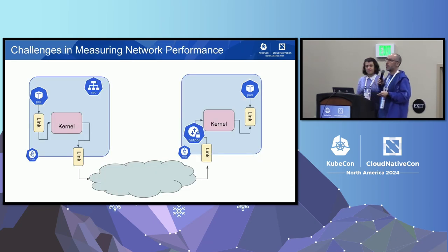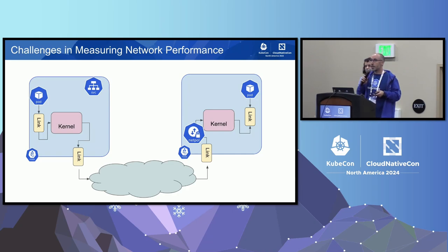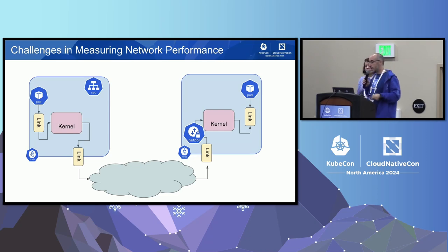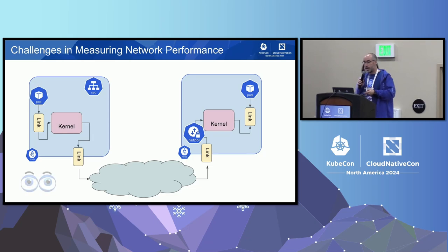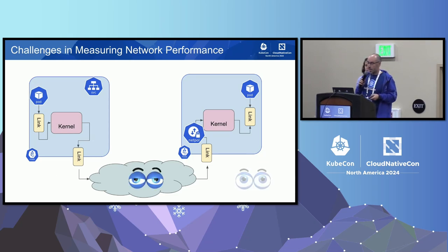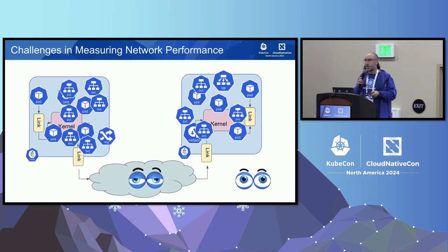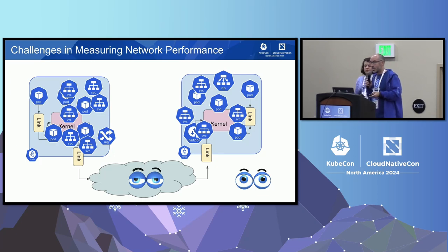We know how service performance works for one packet and one service, but this is not our reality. We have clusters with nodes, and the example I gave was two pods on the same node. What happens when you have a cloud in the middle? Is that performance consistent? How do I measure this? I can put metrics in various places, but then people deploy ingresses, more pods, services — and I have no idea what the performance is. I cannot have all connections in my cluster reporting metrics and analyzing them one by one.